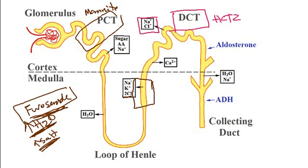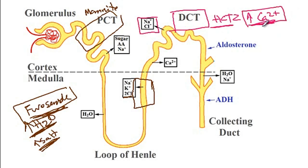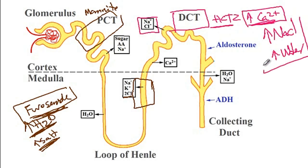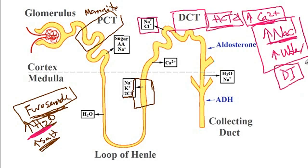Thiazides also increase the paracellular absorption of calcium, so one side effect is hypercalcemia. Given that they increase calcium absorption, these medications are good for treatment of hypertension in patients with osteoporosis. Since hydrochlorothiazide and chlorthalidone lose more salt compared to water, they are good for treatment of nephrogenic diabetes insipidus. Loop diuretics lose more water, whereas hydrochlorothiazides lose more salt.